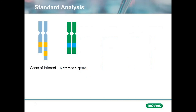To determine copy number variations within the cell population, the number of copies of the gene of interest is quantified and compared to the number of copies of a reference gene of known quantity. A reference gene is used to determine the number of cells that were analyzed for normalization of the gene of interest.